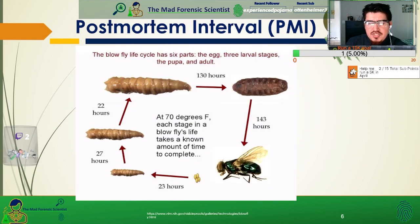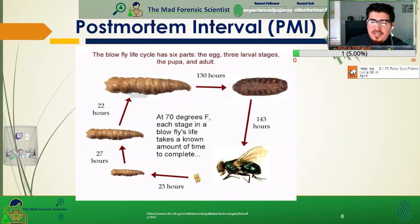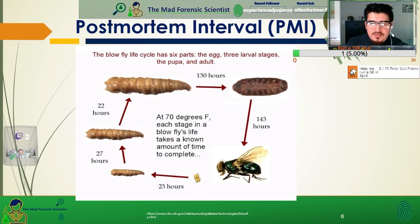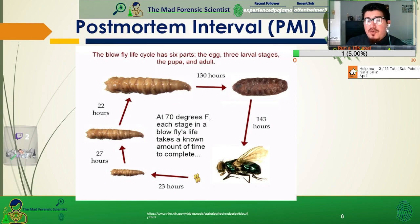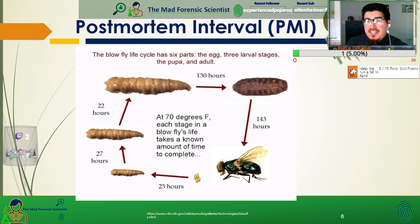Insects develop at known stages as they progress through time. Temperature-dependent growth allows for the estimation of these insects' age if you know the conditions they're growing in. Shown here is the life cycle of an insect, specifically the Lacericata, with temperature held at 70 degrees Fahrenheit. The adult insects come and colonize the body, they'll lay eggs, and after about 23 to 24 hours the eggs will hatch. They'll emerge as first instar larvae and begin to feed on the corpse.